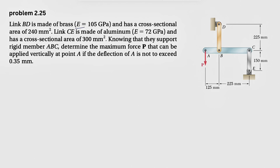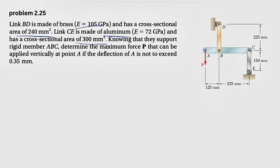Alright guys, welcome back. We're going to be solving another question from the second chapter of Mechanics and Materials by Beren Johnson. We have link BD made of brass, so we have the elastic modulus for that, and it has a cross-sectional area of 240 millimeters squared. We also have information for link CE — it's made of aluminum, with an elastic modulus and area of 300 millimeters squared. They support rigid member ABC, and we need to determine the maximum force P that can be applied vertically at point A if the deflection of A is not to exceed 0.35 millimeters.